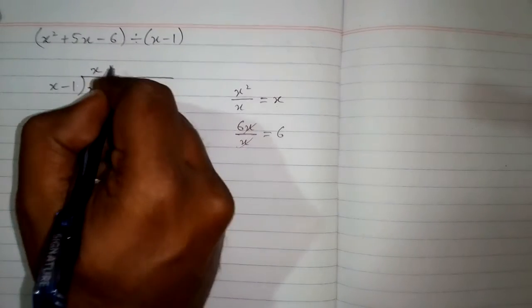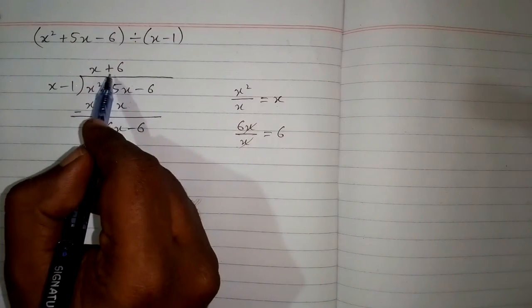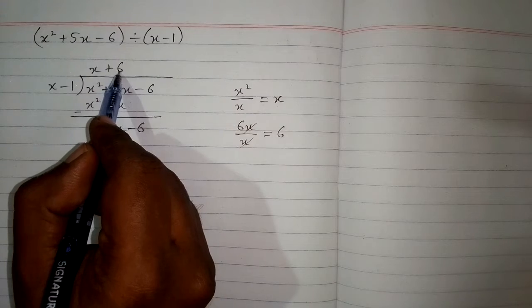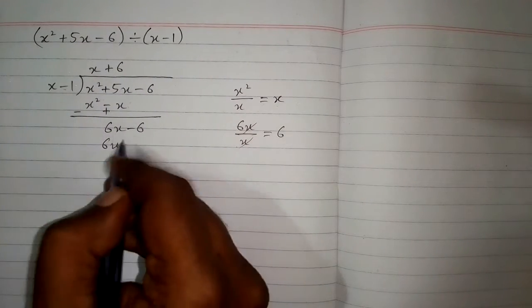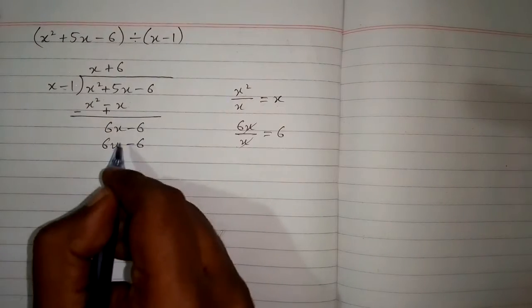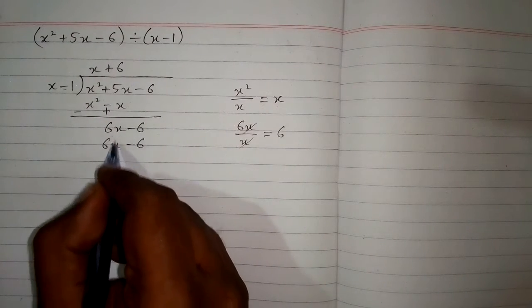Now we will write this plus 6 over here and then multiply plus 6 by x minus 1. So plus 6 multiplied by x is 6x and plus 6 multiplied by minus 1 is minus 6 and then we subtract both of these expressions.